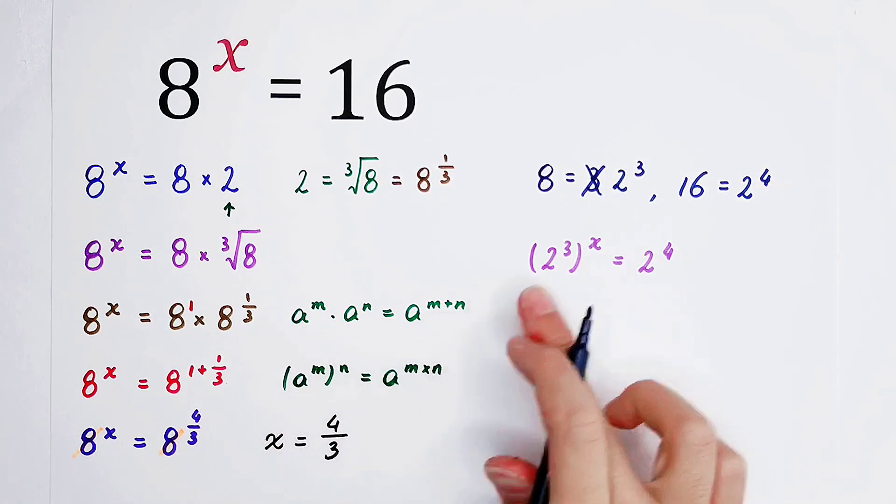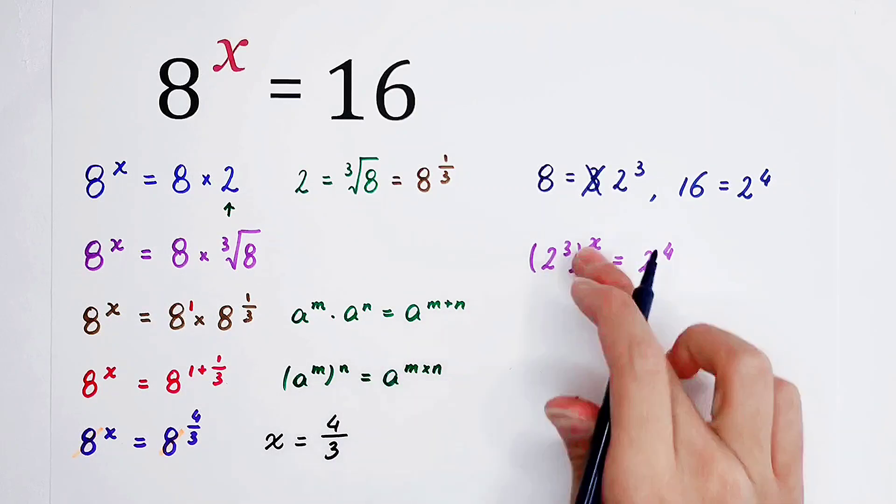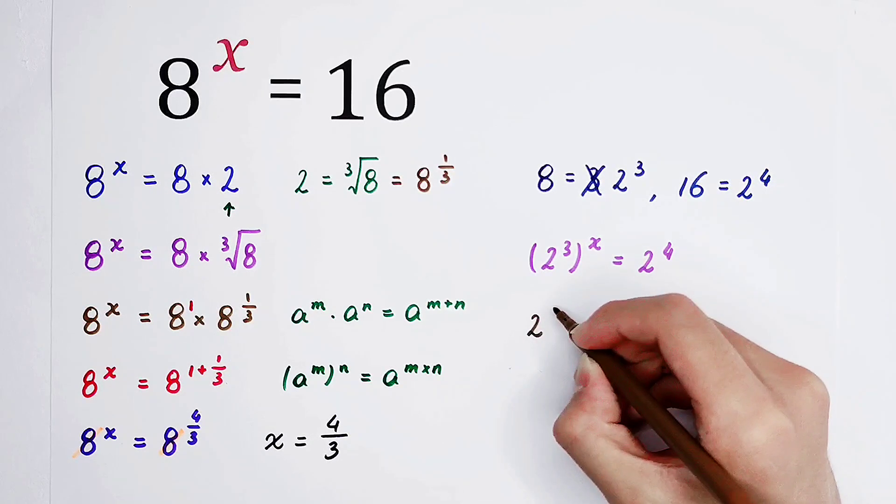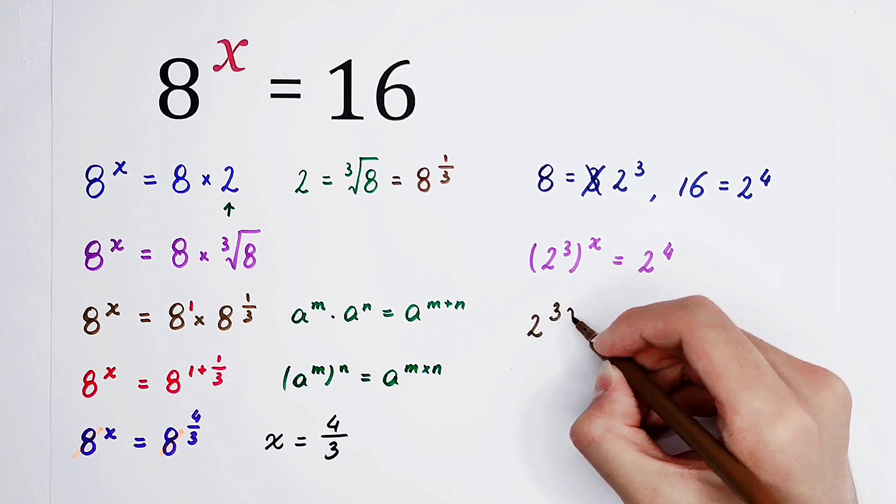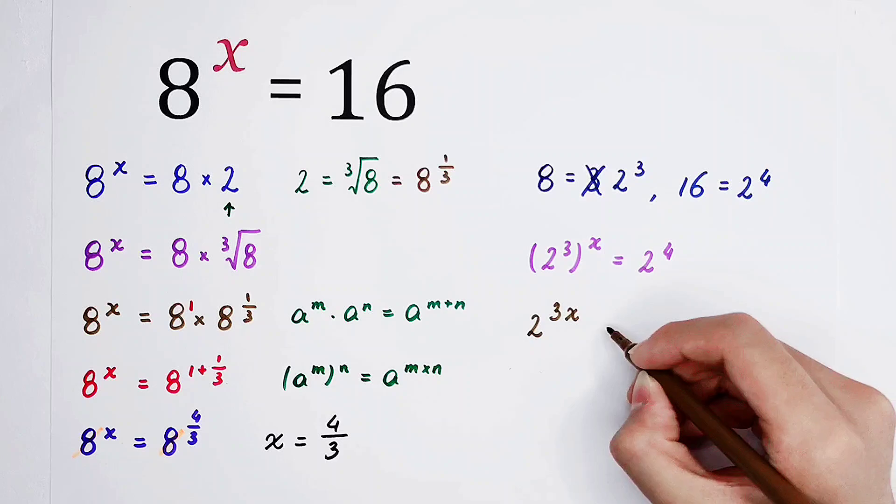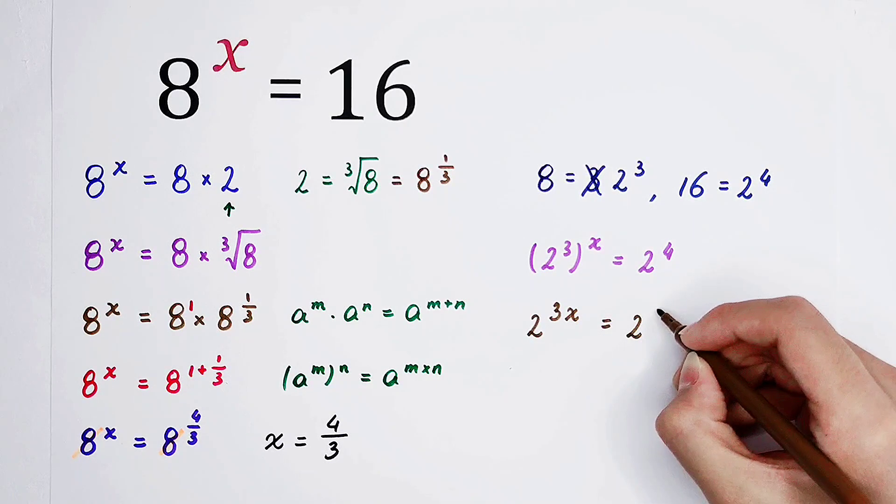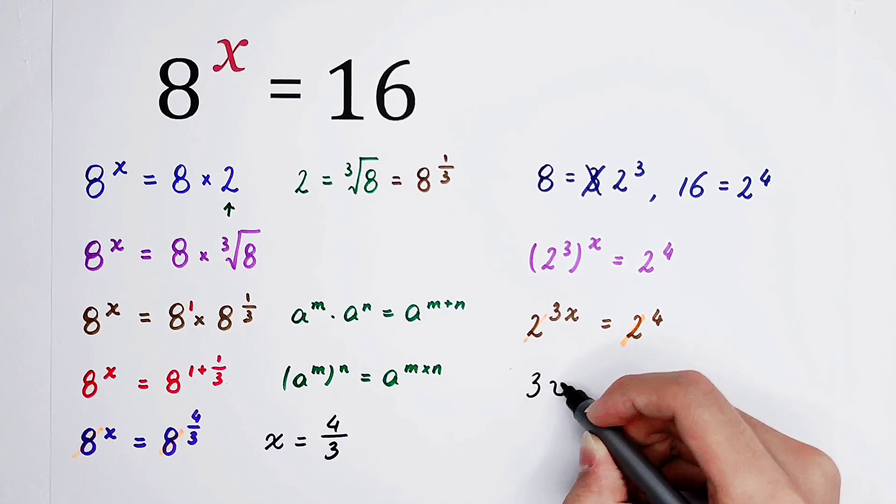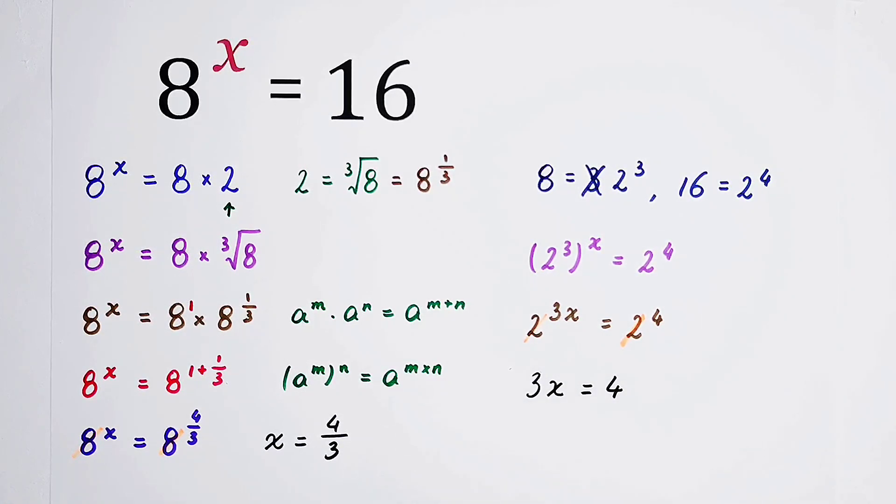So here, A is 2, M is 3, N is x. So the left-hand side is equal to 2 to the power of 3 times x, which is equal to 3x, and the right-hand side is 2 to the power of 4. The bases can be cancelled out, and you can get 3x is equal to 4, and the value of x can be solved easily. It is 4 thirds.